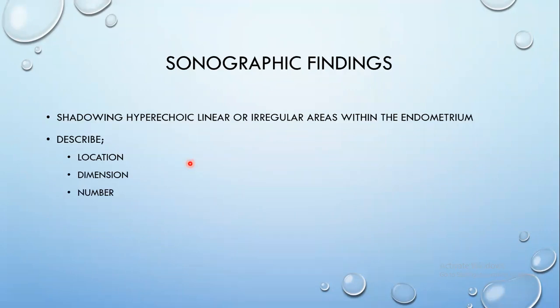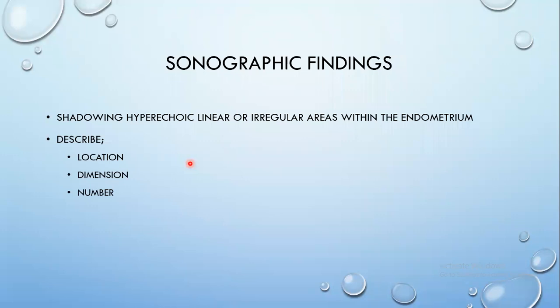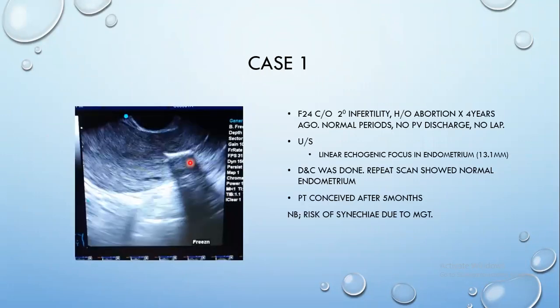On ultrasound scan, you will see shadowing hyperechoic linear or irregular areas within the endometrium. When writing your report, it is very important to describe the location of the focus or foci, the dimensions — that is the size — and the number. Describing location and dimensions is important because, as we see in this image, a linear hyperechoic focus within the endometrium with posterior shadowing can be positioned as though it were an IUD, which is how it can cause infertility.